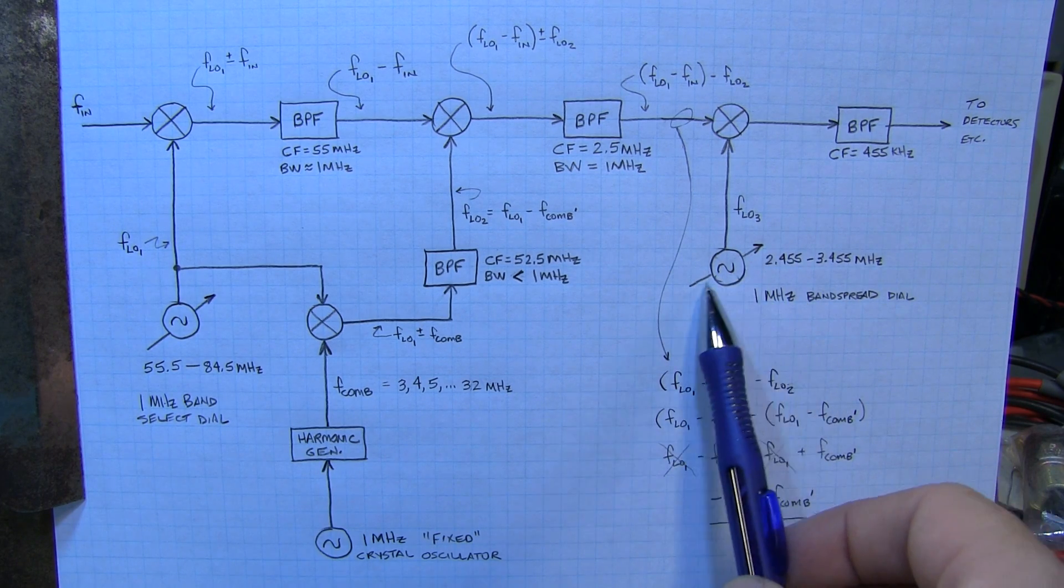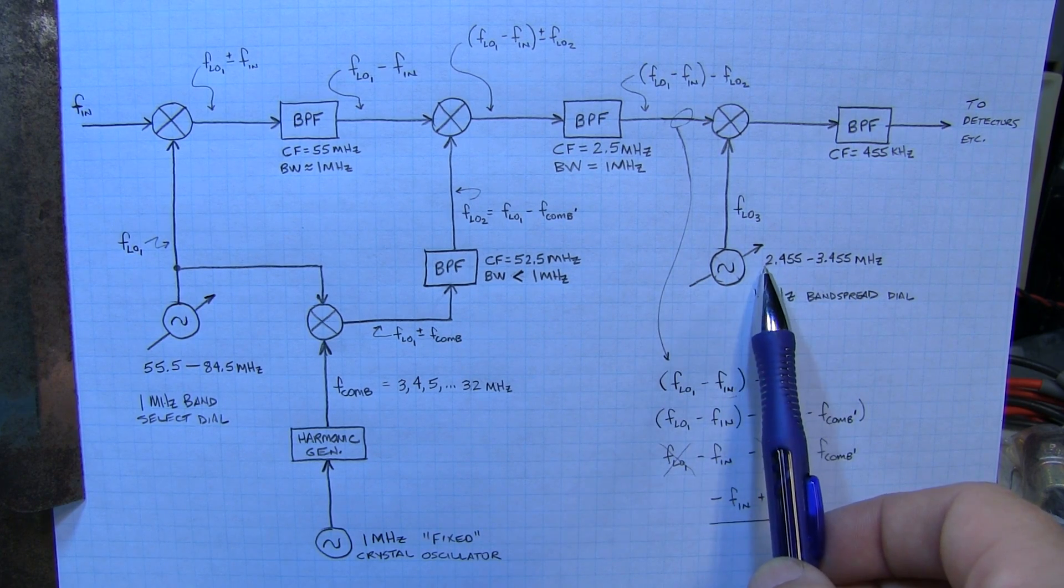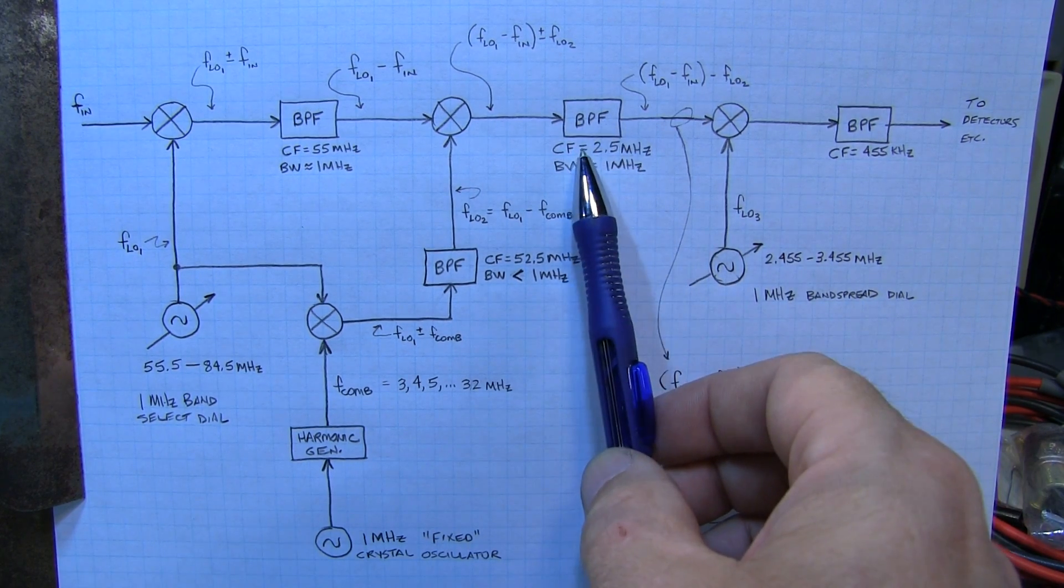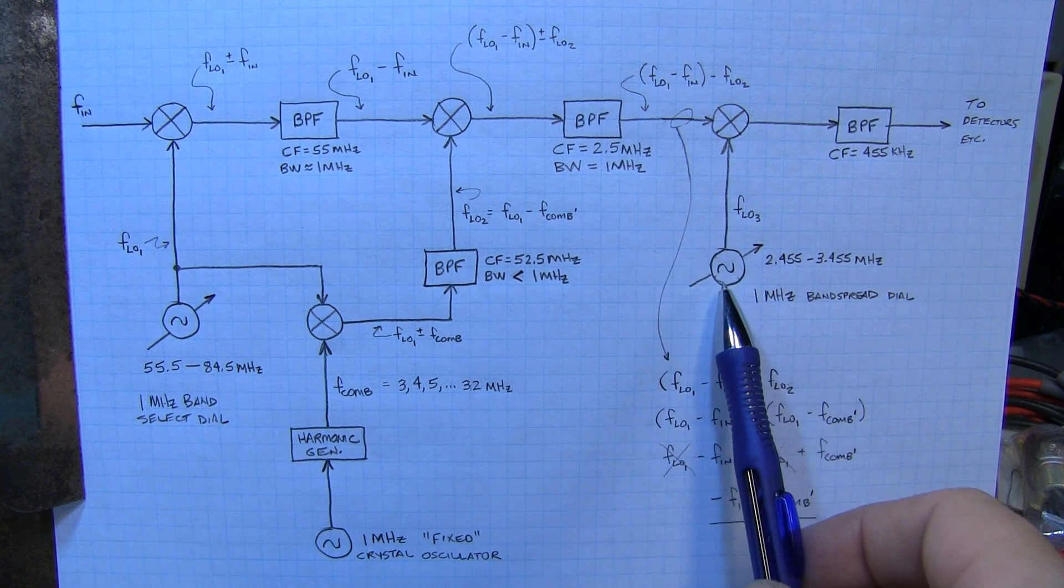With another VFO that we can adjust over just a narrow 1 MHz frequency range. That will allow us to select the desired frequency within the 1 MHz bandpass of this second IF.